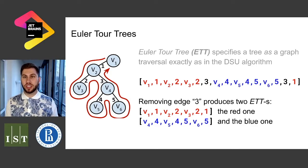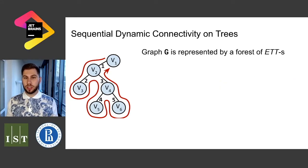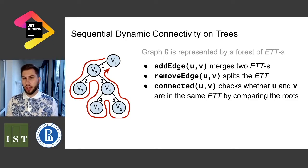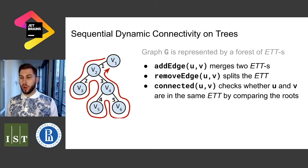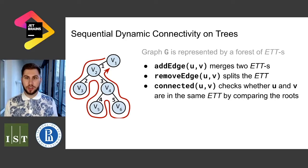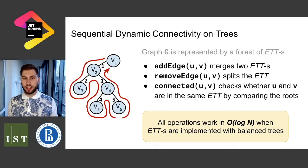Similarly, edge additions can be done in almost the same way. So if we want to solve the dynamic connectivity problem on trees, we represent each tree with an Euler Tour Tree. When we want to add a new edge we simply merge two Euler Tour Trees; when we remove an edge we split the Euler Tour Tree and observe two new Euler Tour Trees. For a connectivity query, we go to the root of u and the root of v and check whether these roots are equal — if equal, they are in the same component; otherwise, they are in different components.